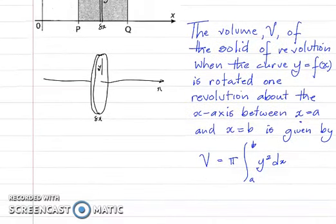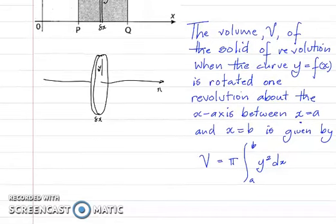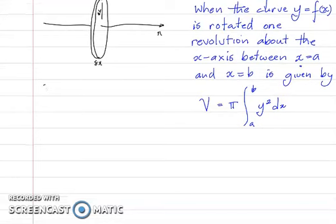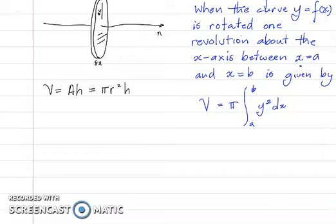The shape is a cylinder — a solid shape with a uniform cross section. The volume of any solid with a uniform cross section is given by V = A × h, where A is the area of the cross section. Since the cross section is a circle, it is π r² h. In this instance, the radius r is y and the thickness h is delta x.